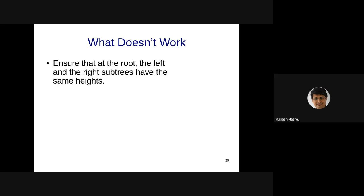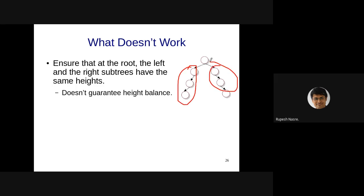One approach to height balancing is ensuring the left and right subtrees have exactly the same height at the root. But this doesn't work — similar to how checking only the root's left and right for BST didn't work. The property must be satisfied at every node, not just the root. So the next idea is to ensure that left and right subtrees have the same height at every node.